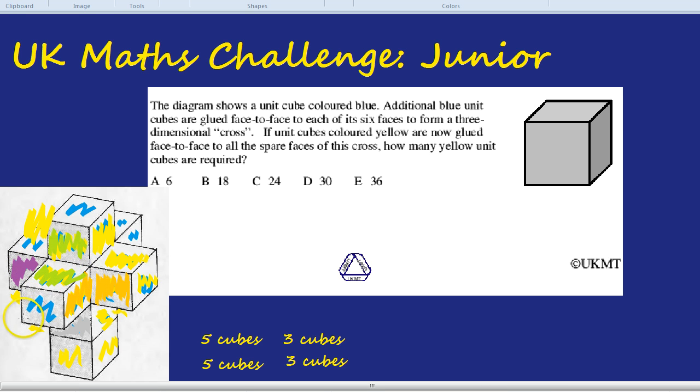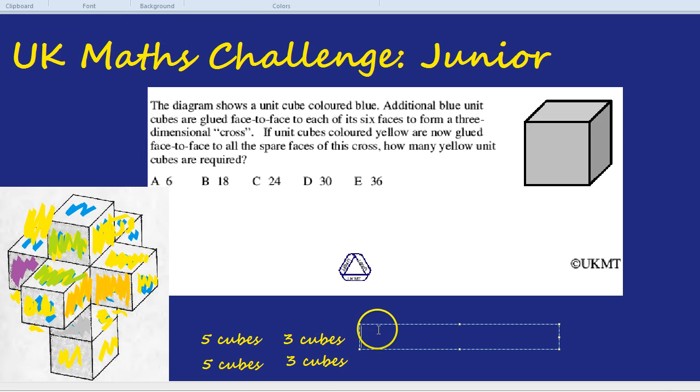So in other words, for the front blue cube and the back blue cube, there's only one face left to cover. The front of the front and the back of the back. So this side here, the front of the front, and the back of the back. So that's one more cube there and one more cube here.